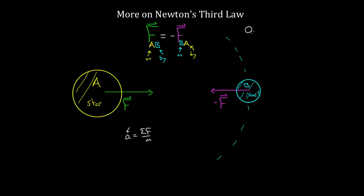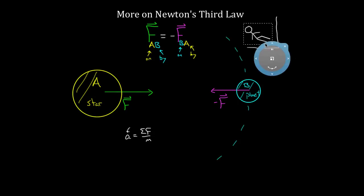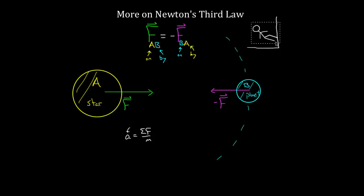Even if you came in flying at a wall Chuck Norris style trying to drop kick it, as soon as you start to make contact with the wall, you're going to exert a force on the wall, and the wall has to exert a force back. You'd exert a force on the wall to the right — the force on the wall by your foot — and there'd have to be an equal and opposite force instantly transmitted back on your foot, the force on your foot by the wall. This happens instantaneously; there is no delay.